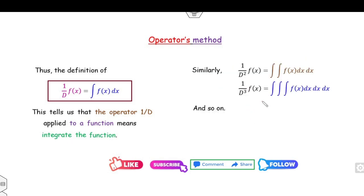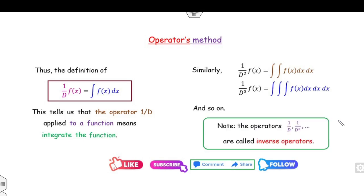So that is the first case when you consider P(D) as D or D cubed. For the second case, whatever polynomial you have, you can factorize it into linear factors like (D minus alpha1)(D minus alpha2), and so on. Since 1 over D represents integration while D represents differentiation, these are inverse operators of each other — that is why we call 1 over D the inverse operator.